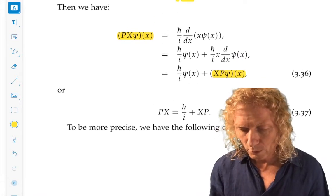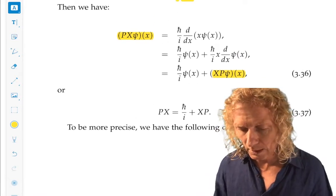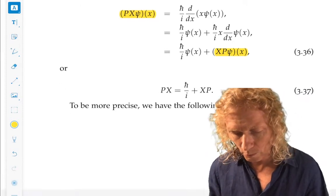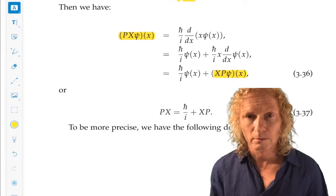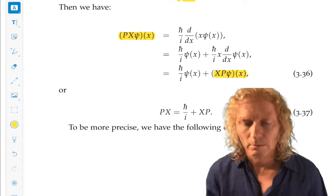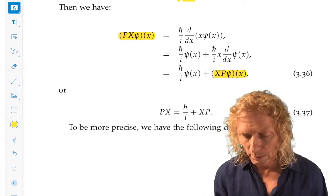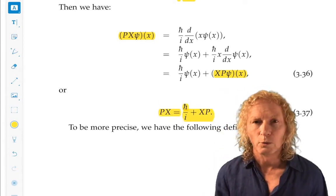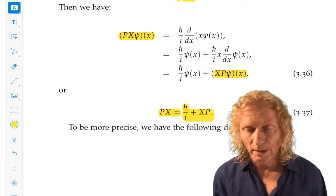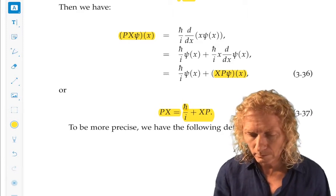If you collect the first and the last lines together, what we've shown is that PX equals h bar over i plus XP.